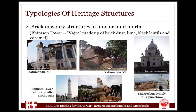The second typology is brick masonry structures in lime or mud mortar. These are typical load-bearing masonry structures with no timber frames or non-structural timbers if they have any. In the lower part of the picture you can see Bimsem Tower, also called as Dharara, a typical unreinforced brick masonry tall tower of nine stories, 203 feet tall, built in 1825. The main material used is basra, a typical Nepali material made up of brick dust, lime, black lentils and caramel. Interestingly, it had no iron as a construction material. It was completely destroyed by this earthquake.